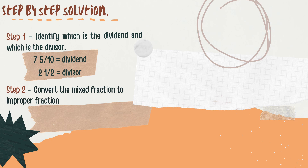Step 2: Convert the mixed fraction to an improper fraction. 7 and 5 tenths and 2 and 1 half are both mixed fractions, so we convert them first. Multiply the whole number by the denominator: 7 times 10 is 70. 70 plus 5 is 75. Copy the denominator — that gives 75 over 10. How about 2 and 1 half? 2 times 2 is 4. 4 plus 1 is 5. So that is 5 over 2.